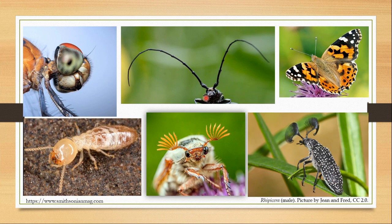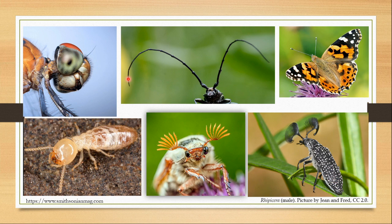Now let's look at these pictures and recapitulate just once more. This is the head of a dragonfly and here you see bristle-like antennae — this is the setaceous type. Here the antennae is thread-like, so this is the filiform antennae. Here the antennae's tip is knob-like — this is the capitate antennae. Here the antennae looks like a string of beads, so this is the moniliform antennae. Here the antennae looks like lamellae — only the terminal segments have these extensions. And in this one, the flabellate type, all the segments have these extensions.